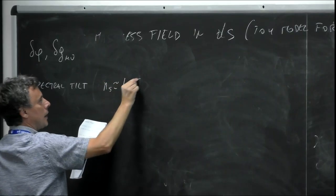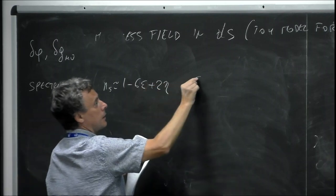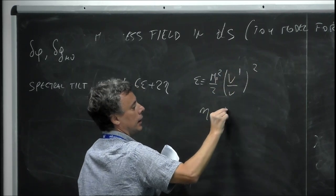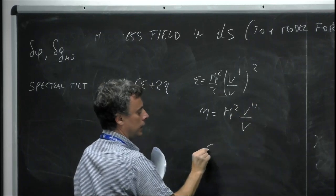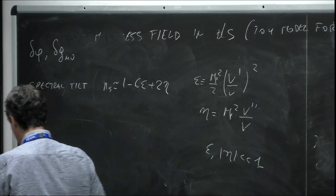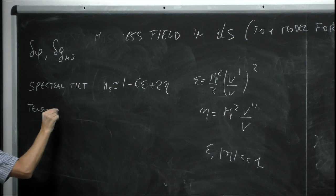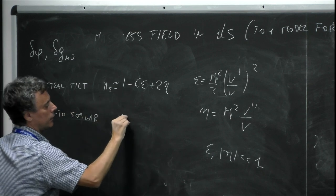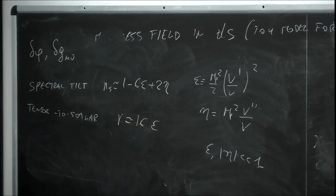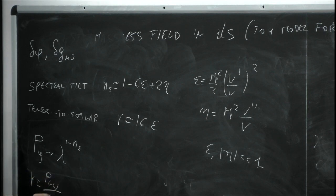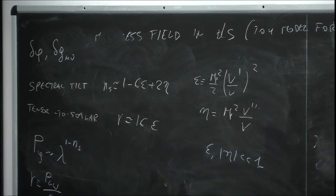When you add δφ and δg_{μν} and include δφ in the Einstein equations, it's no longer a test field, and at the end of the day you find: the spectral tilt n_s = 1 − 6ε + 2η, where ε = M_Pl² · (1/2)(V'/V)² and η = M_Pl² · V''/V. These quantities are much smaller than one during slow roll. The tensor-to-scalar ratio r = 16ε. We defined the power spectrum P_ζ going as k^{(1−n_s)}, and r = P_{gravitational waves}/P_ζ.